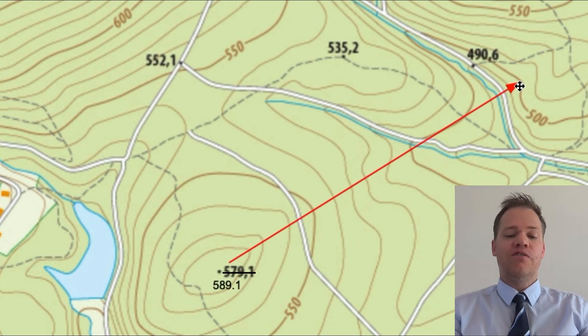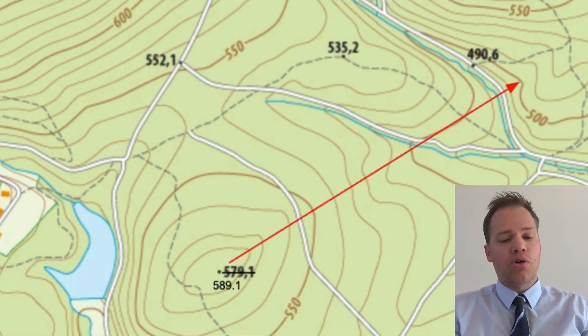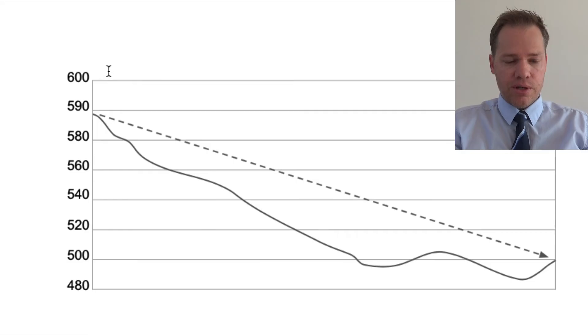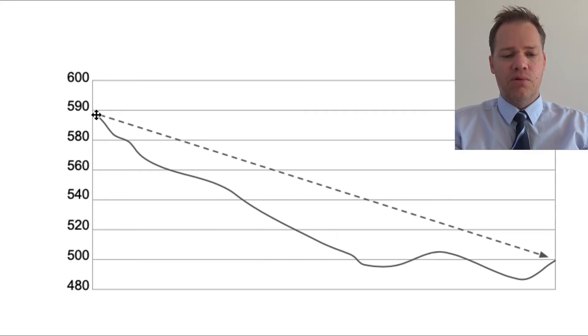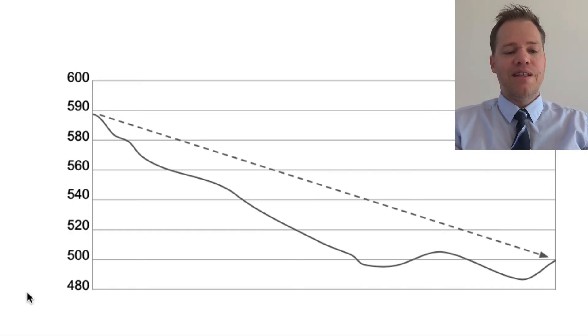I think we have intervisibility between those two points. Let's go and have a look at the cross section. We can see we're going down from that 589 meters, more or less, and we are looking down towards point B, and we will see that there's no blocking feature. So there is definitely intervisibility between those two points. If you have any further questions, please go down to the comment section. Otherwise, feel free to like, share, comment and subscribe. Thanks for watching — see you next time.